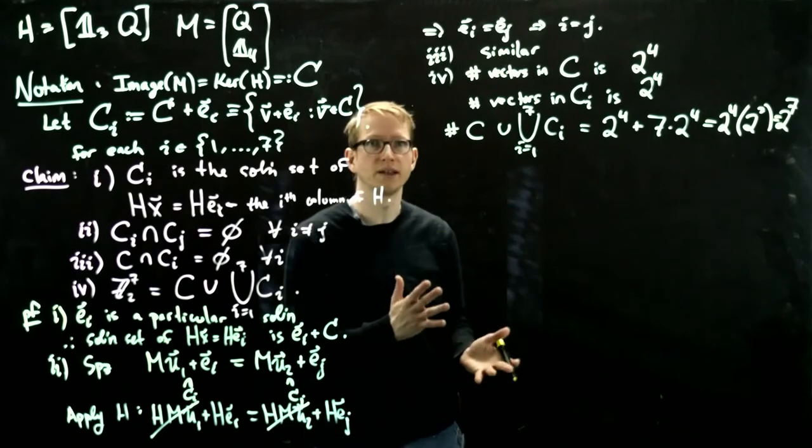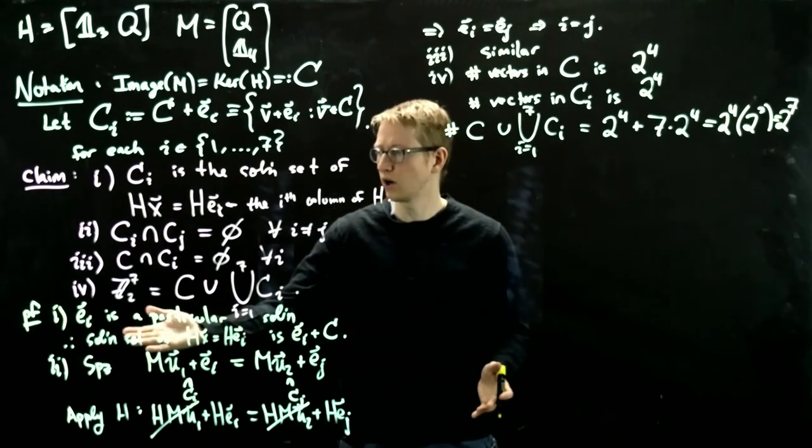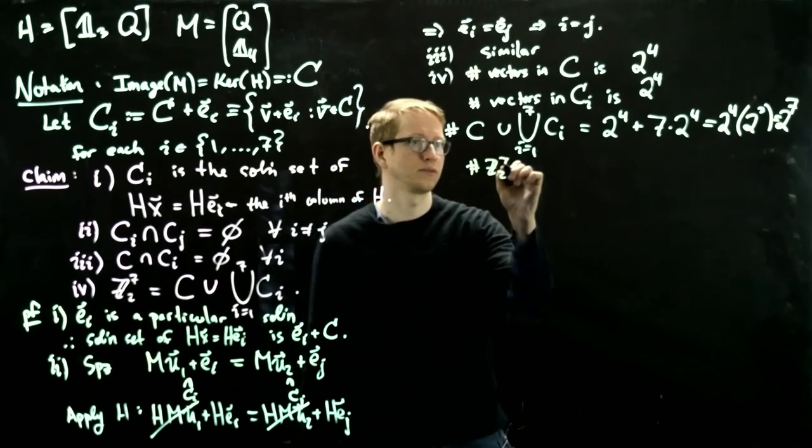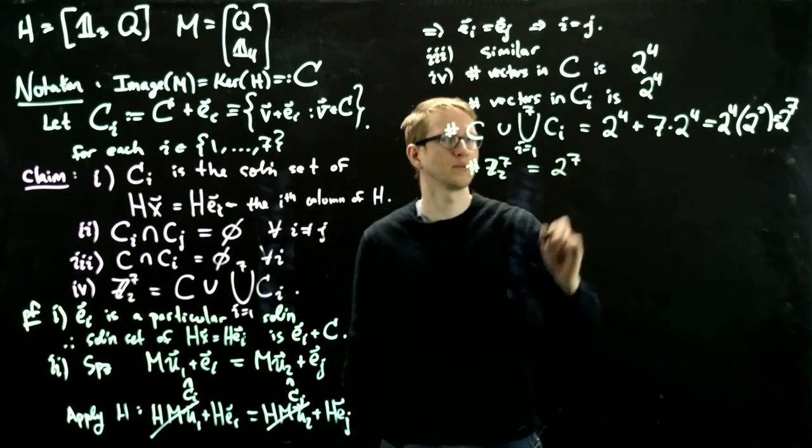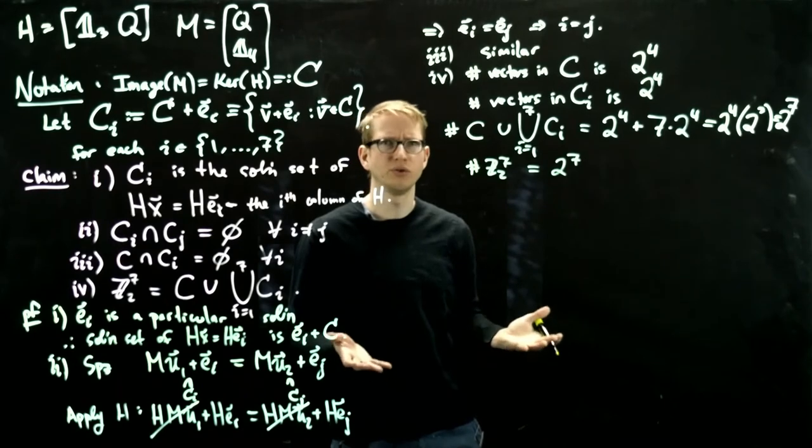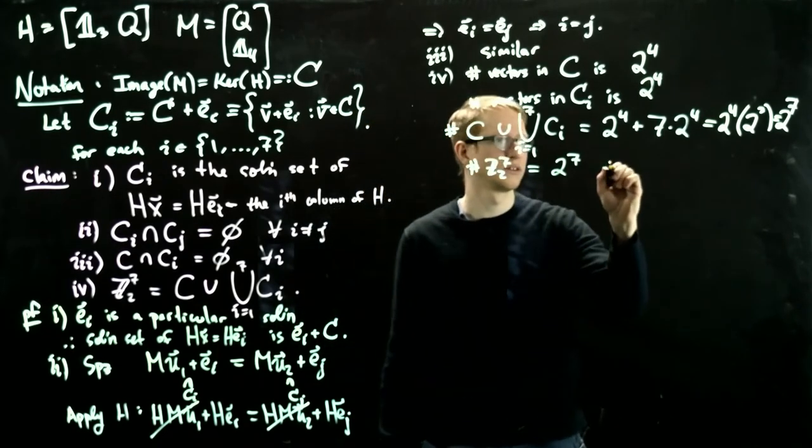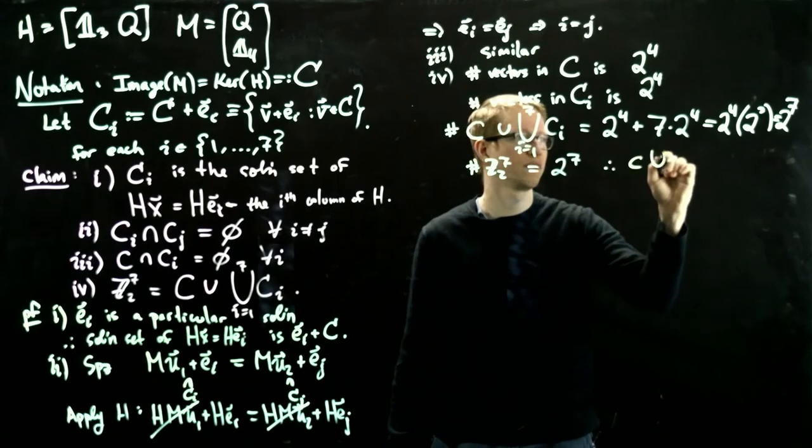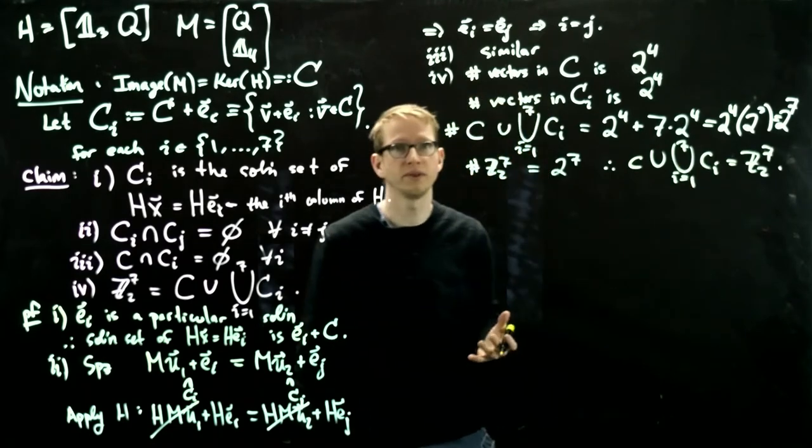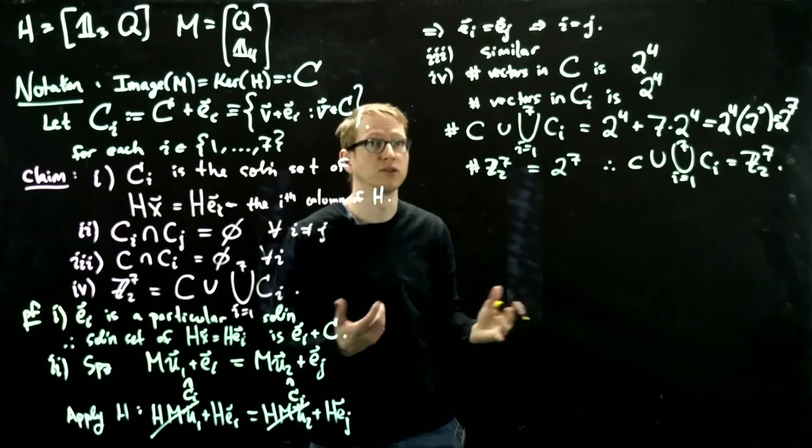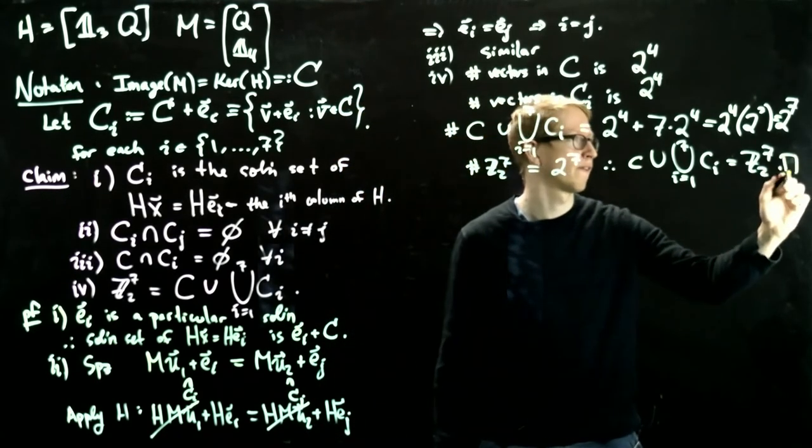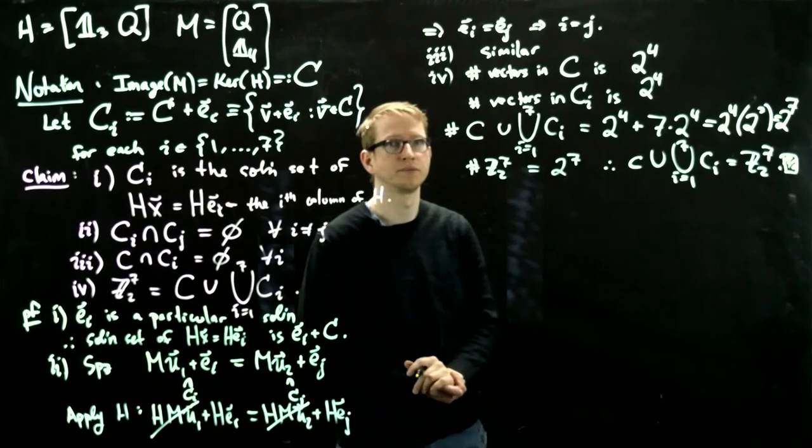So the number of vectors here is 2 to the 7. How many vectors are there in Z mod 2 to the 7? Also 2 to the 7. And all of these vectors are different. So the only way that this is possible is if the union actually equals the whole thing. Therefore this union equals all of Z mod 2 to the 7, because it contains all of the vectors in Z mod 2 to the 7. And that's the end of the proof.